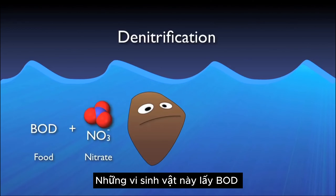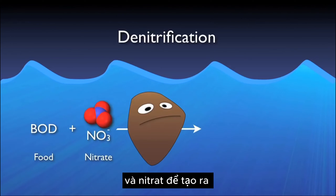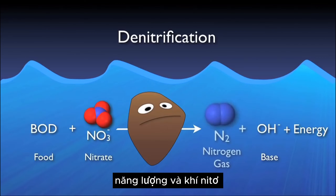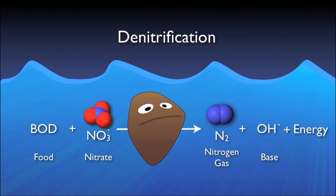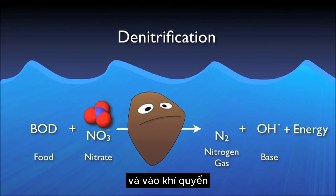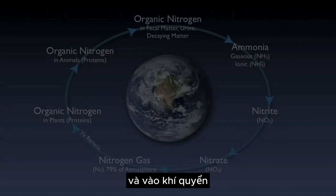These bugs take the BOD and nitrate to produce energy, base, and nitrogen gas. The base is actually very useful in buffering the acid produced during nitrification. The nitrogen gas then floats in tiny bubbles to the surface and into the atmosphere.